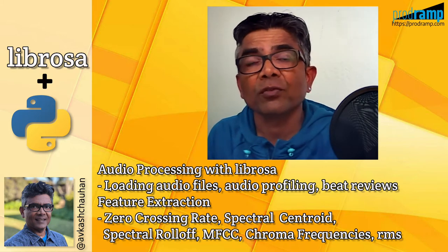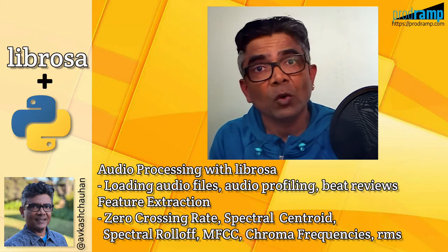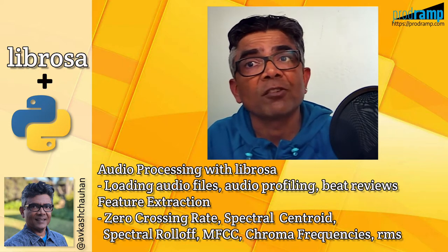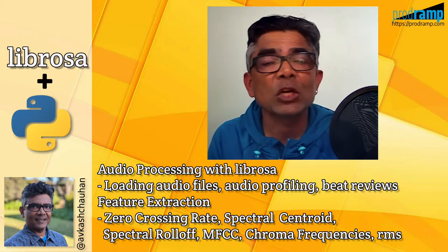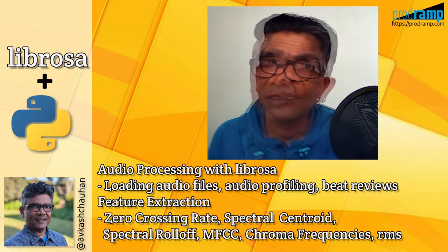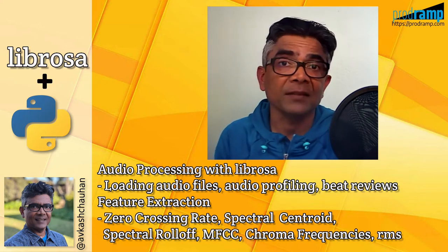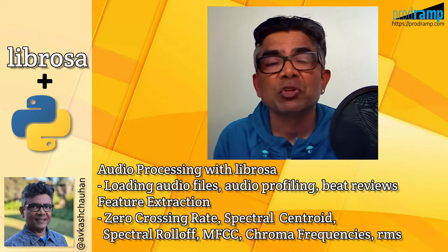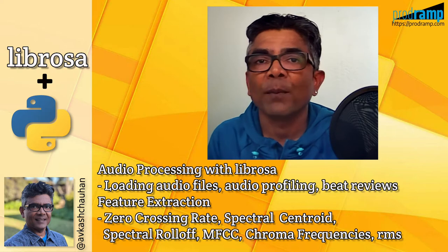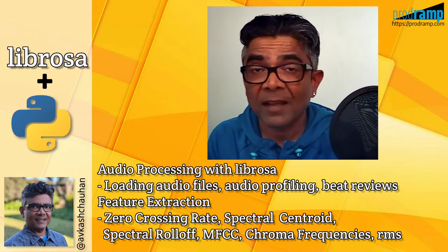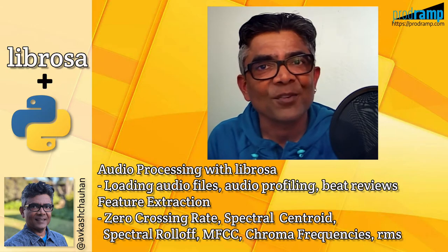The key features we are going to extract in this tutorial are zero crossing rate, spectral centroid, spectral roll-off, MFCC, chroma frequencies, and RMS. While you extract those features, you are going to learn various methods which can be used to get deeper knowledge about the LibRosa Python library as well. I'm glad that you are here with me, so let's get ourselves started.